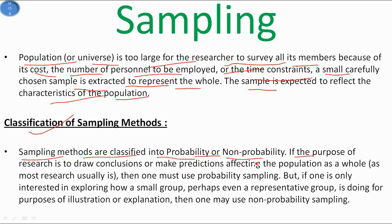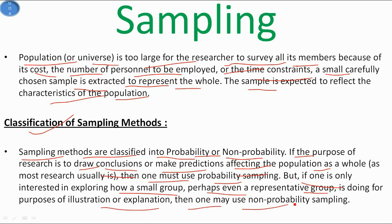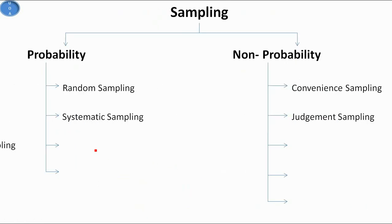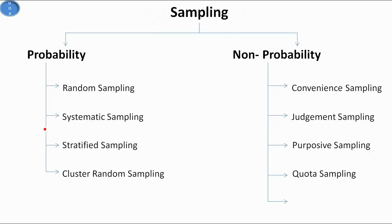If the purpose of research is to draw conclusions or make predictions affecting the population as a whole, then one must use probability sampling. But if one is only interested in exploring how a small group — perhaps even a representative group — is doing for illustration or explanation, then one may use non-probability sampling.